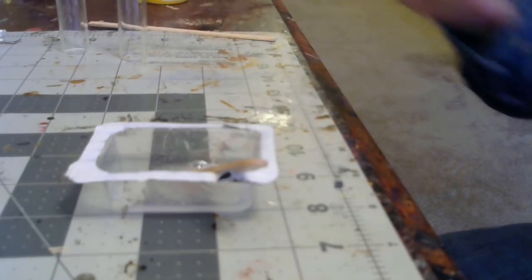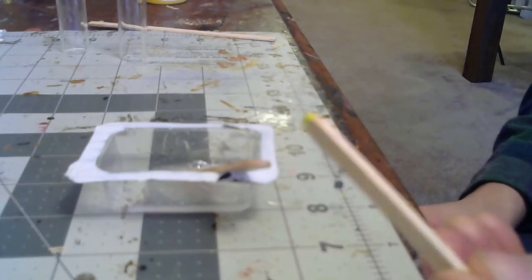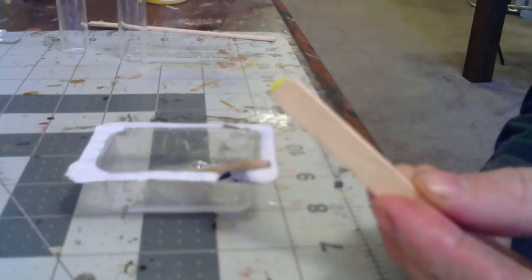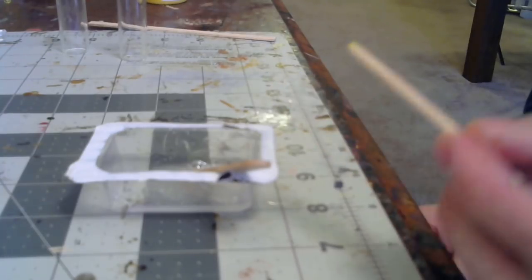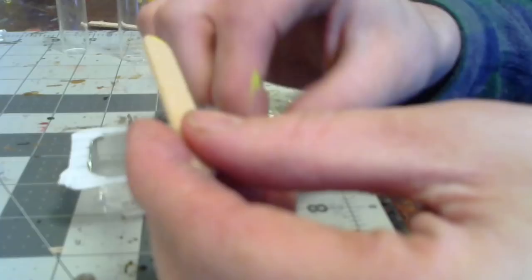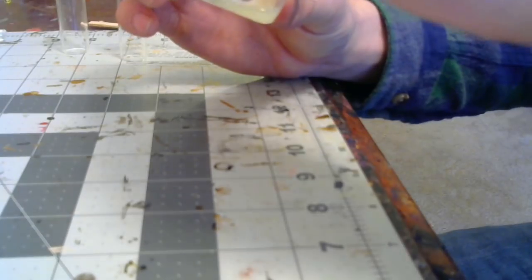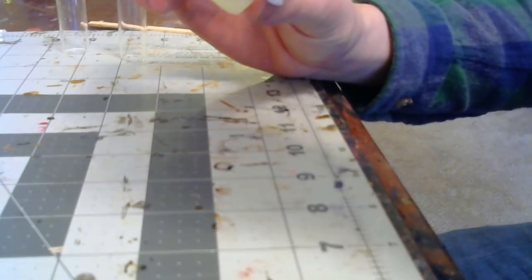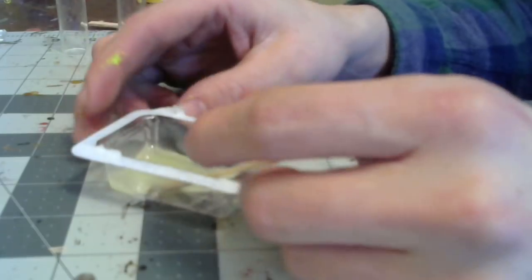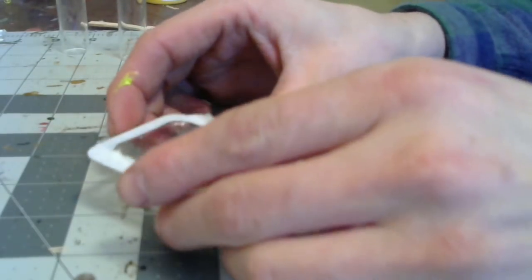Now for the fun part. Mix up some 5 minute epoxy and add a very conservative amount of paint. Take careful note in the video of how much I use. There's a certain balance of opaqueness versus transparency that needs to be achieved. The epoxy needs to be transparent enough to show the miniature beneath, but needs to be opaque enough to contain the green light and to slightly obscure the miniature. This ratio creates the illusion of the bottle being full of glowing liquid. Here's what it should look like.